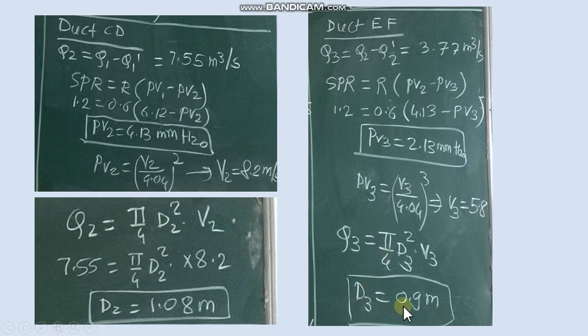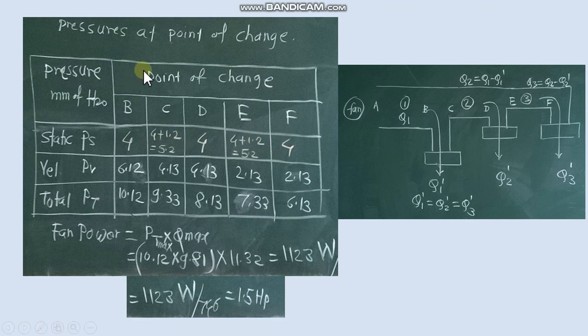So in this way we get diameters in all ducts. Now pressure at each point of change we write B, C, D, E, F. These are the change points. So at B point, then D point and F point, as per the given PS value is the same: 4, 4, 4.